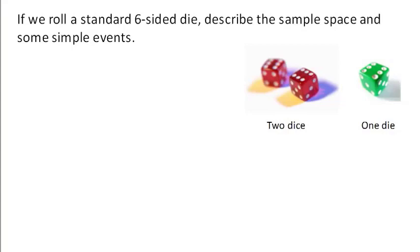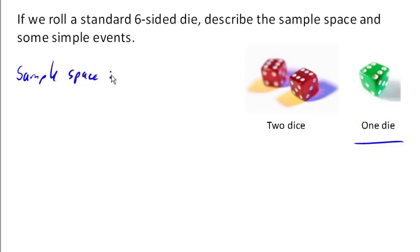The sample space is all the possible simple events, and a simple event is simply an outcome of an action or an experiment that can't be broken down any further. So if we're rolling a die — that's the singular of dice, in case you were curious — and we've got a six-sided die, then the possible outcomes, the sample space, are rolling a 1, 2, 3, 4, 5, or 6. Each of these is a simple event.